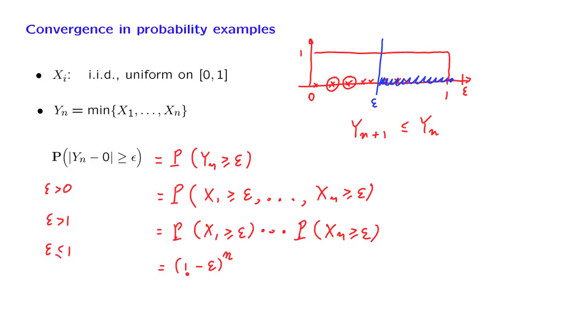Now, epsilon is a positive number. So 1 minus epsilon is strictly less than 1. And when we take higher powers of a number that's less than 1, we obtain something that converges to 0 as n goes to infinity. And that's what we needed to verify.